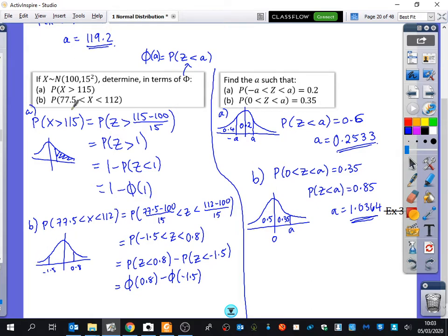Again, I drew a diagram for this one that I've got down here between 77.5 and 112. So I standardized the X by changing it to a Z, and I standardized the 77.5 and 112 by using the take away the mean divided by the standard deviation, and I came up with this. My sketch then allowed me to think, okay, well, it's the probability of it being less than 0.8 minus the probability of it being less than 1.5, which then allowed me to put it into that phi notation that I've got there.